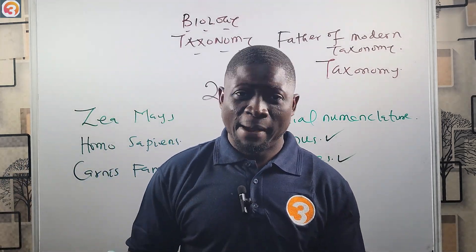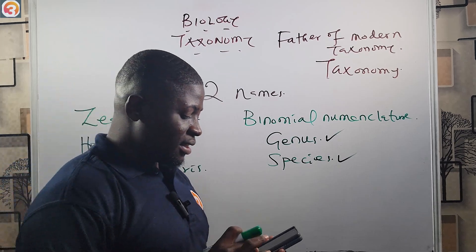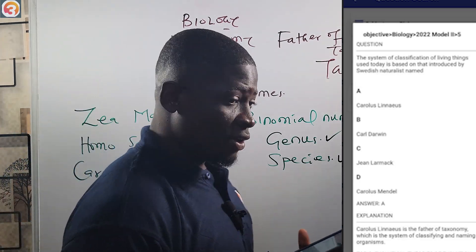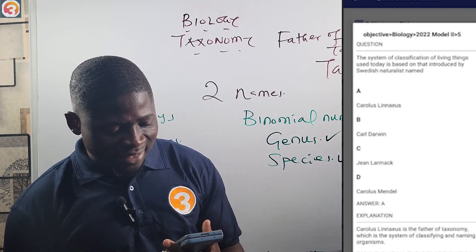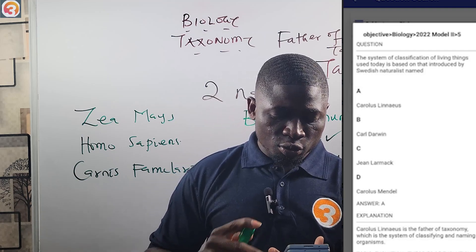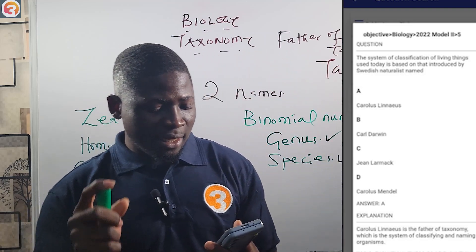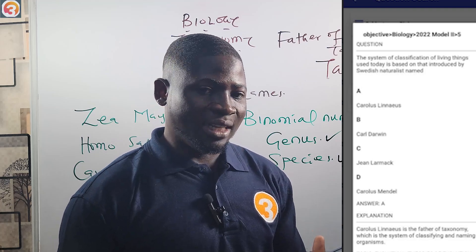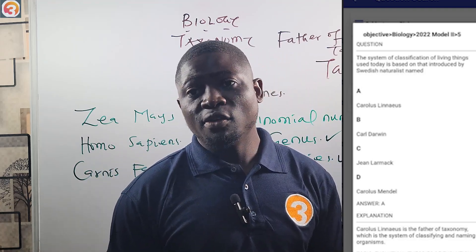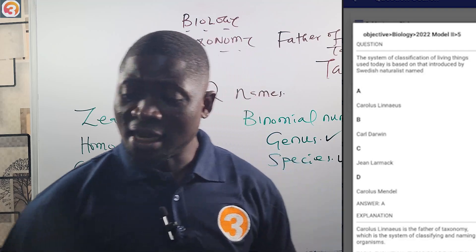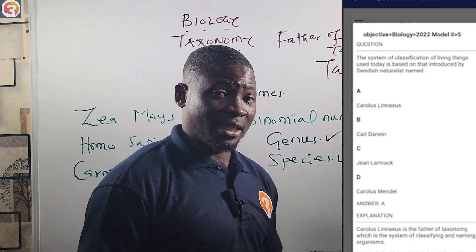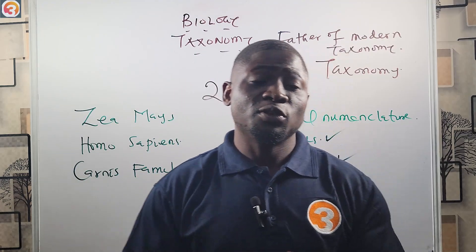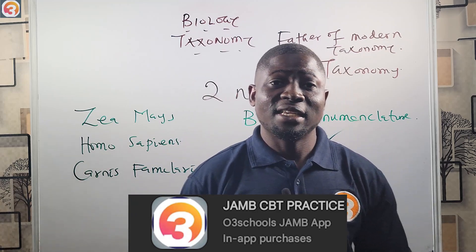Before we end the class, here is a past question from the Otiris Good Jump App — a 2022 model 2, question 5. It asks: 'The system of classification of living things used today is based on that introduced by a Swedish naturalist named: A) Carolus Linnaeus, B) Carl Darwin, C) Jean Lamarck, D) Carolus Mendel.' The correct answer is A — Carolus Linnaeus. Please download and activate your app, like the video, subscribe, share, and I'll see you in the next episode.